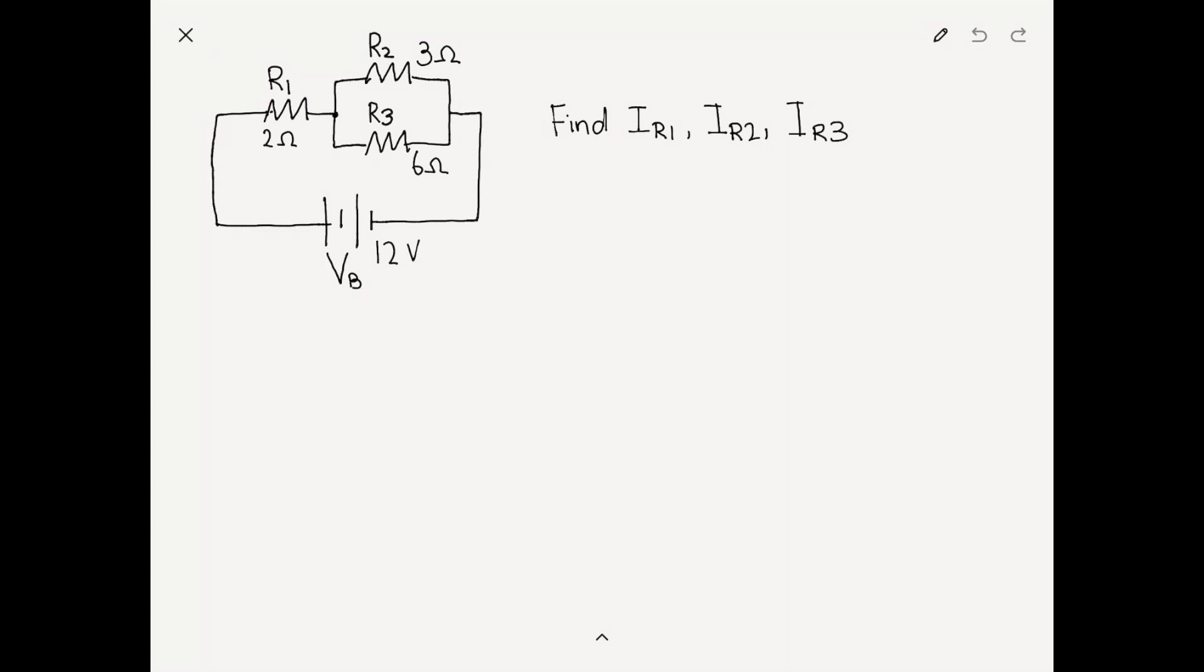First, we're going to want to find the equivalent resistance of R2 and R3. So we know the expression 1 over Rp equals 1 over R2 plus 1 over R3. And solving for Rp gives Rp equals R2 times R3, R2 plus R3.